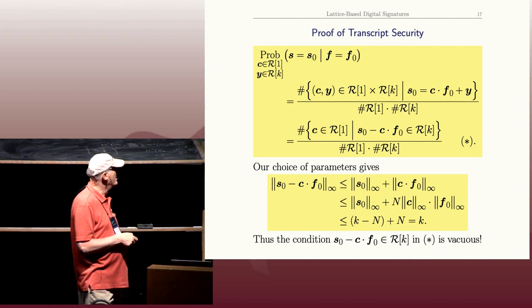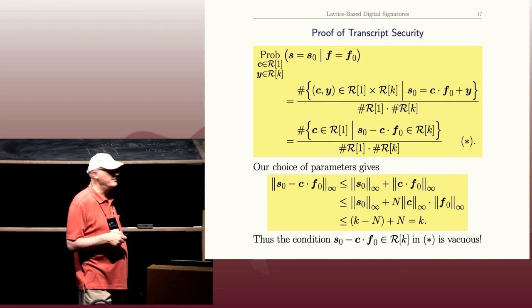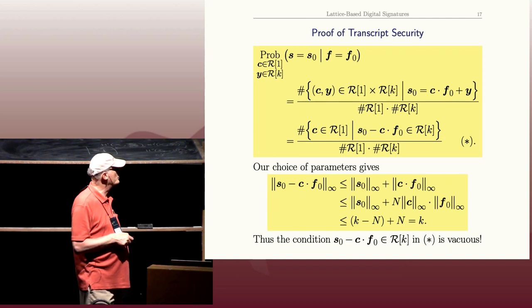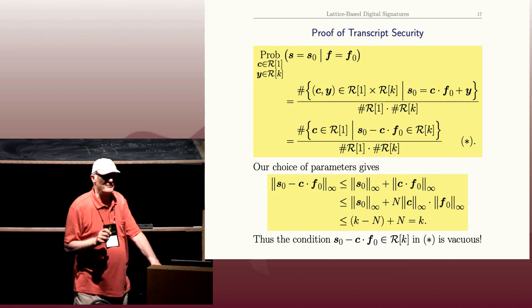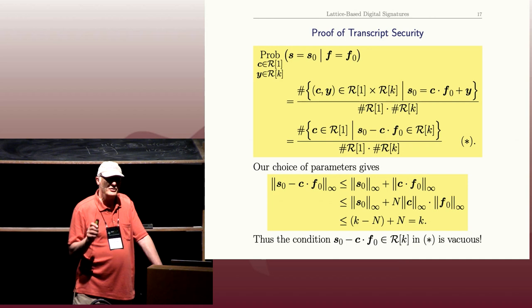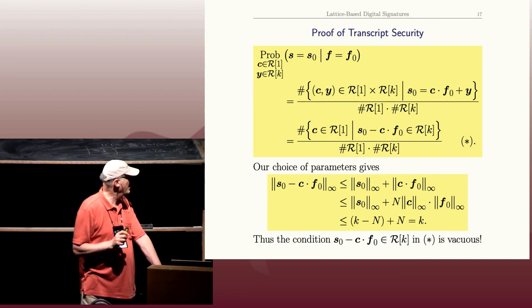But C and F naught have coefficients that are at most 1, so these two terms are 1. And also, remember S naught, remember the rejection sampling step. That's crucial. The only S naughts that get released have coefficients at most K minus N.